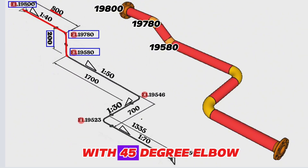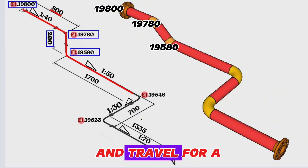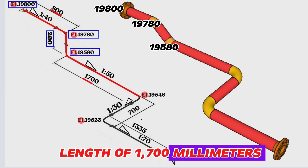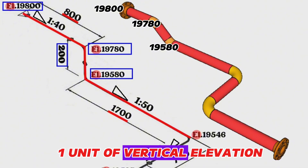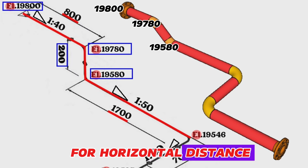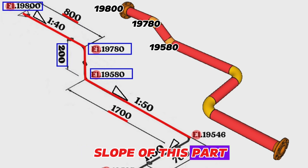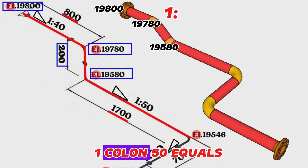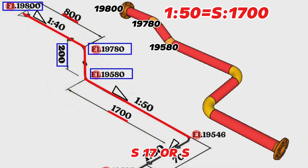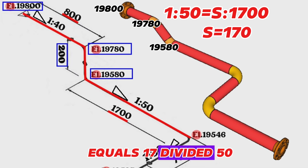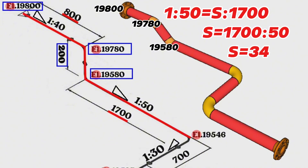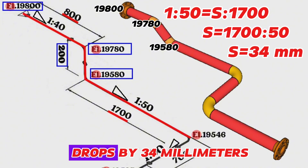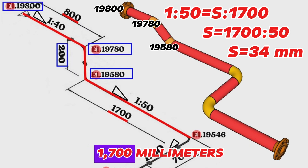Then the pipeline turns with a 45-degree elbow to the south direction and travels for a length of 1,700 millimeters. The slope symbol ratio in this part of the pipeline is 1:50, meaning that for every 1 unit of vertical elevation there are 50 units of horizontal distance. We calculate: 1:50 = S/1700, so S = 1700 ÷ 50 = 34 millimeters. This means the height of the pipeline drops by 34 millimeters over a distance of 1,700 millimeters.